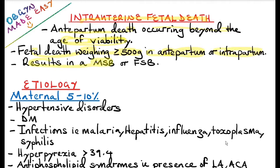It results in a macerated stillbirth or a fresh stillbirth. A macerated stillbirth is one that has already started undergoing degenerative changes, whilst a fresh stillbirth has not yet started undergoing degenerative changes. A macerated stillbirth usually occurs before labor in the antepartum period, whilst a fresh stillbirth usually occurs during labor in the intrapartum period.